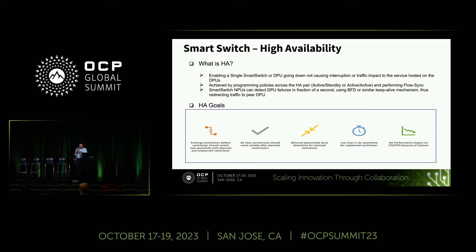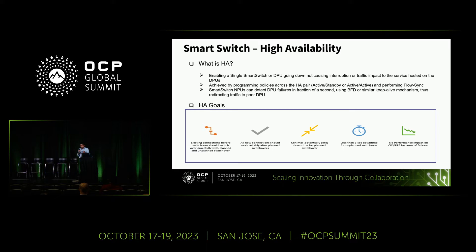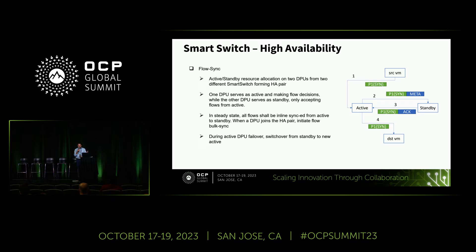Smart Switch NPUs can also detect DPU failures in a fraction of a second using BFD or other keepalive mechanisms. The HA goals are: existing connections should have less interruption, all new connections should work reliably after planned switchover, minimal impact to existing flows for planned switchover, and no performance impact on CPS or PPS. The next few slides will touch base on high availability and how that is achieved in the Smart Switch topology.